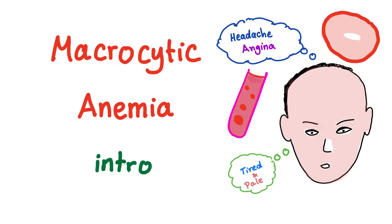Hey everybody, I'm glad that you're still alive through medical school. It's tough, but you're gonna do it — I'm rooting for you. Macrocytic anemia. We have finished talking about microcytic anemia, including iron deficiency anemia, anemia of chronic disease, thalassemia, as well as sideroblastic anemia. Today let's talk about macrocytic anemia. There is a playlist in my channel called Hematology Oncology that has all of the videos on anemias, so please check that.